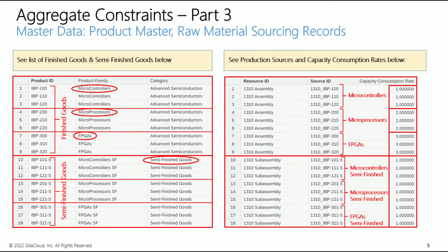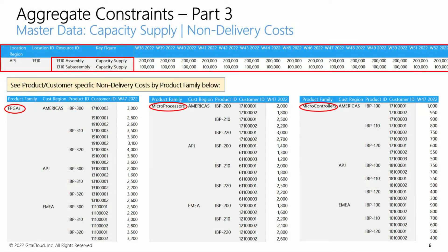The Optimizer needs to balance constrained capacity allocation in the assembly line, given large differences in capacity consumption rates. On the other hand, all semi-finished products need one capacity unit from the sub-assembly line. The assembly line has 200,000 units of capacity every week, while the sub-assembly line has 100,000 units. You can also see product-customer specific prices or non-delivery costs by product family — FPGAs are generally priced higher than microprocessors, which are priced higher than microcontrollers.